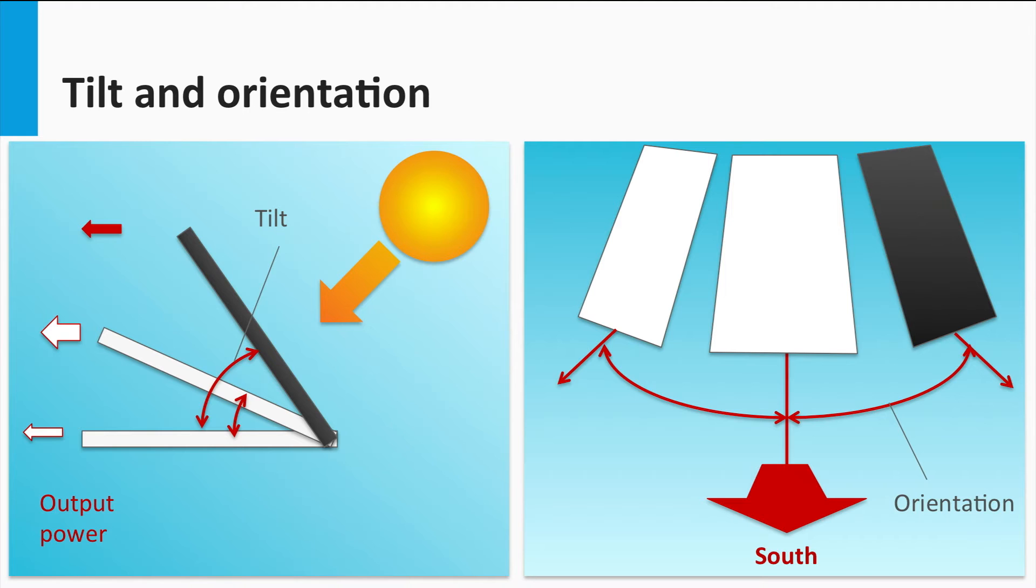Note that different places and people have different practices of defining the azimuth. The most common reference points are the geographic north and south. So how does playing with the orientation and tilt of the PV module alter the amount of light falling on it? For this, let's take a look at this animation.